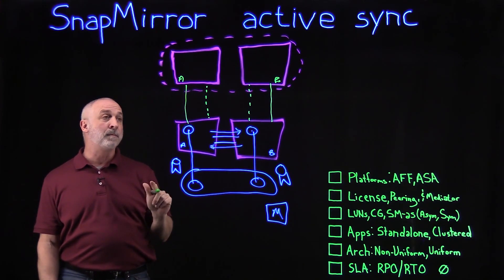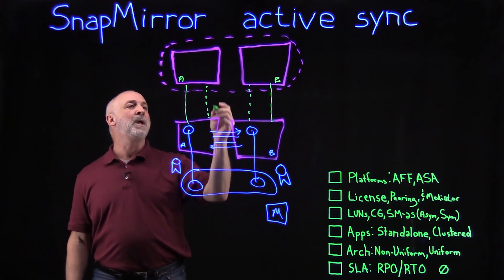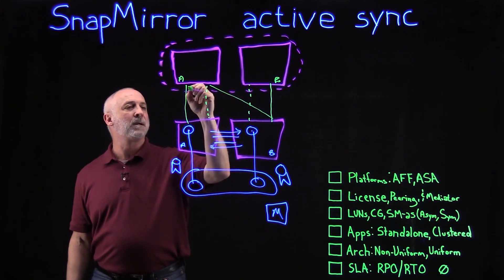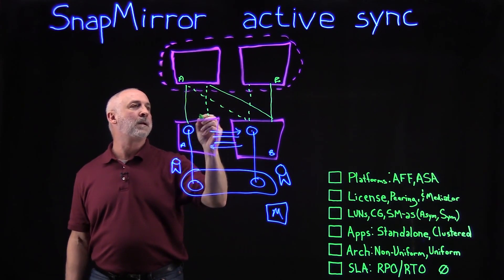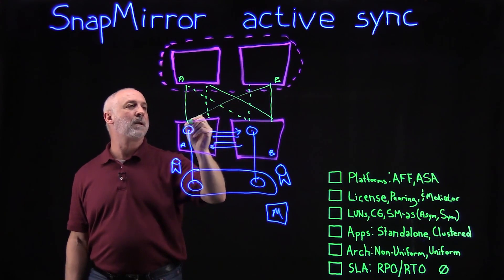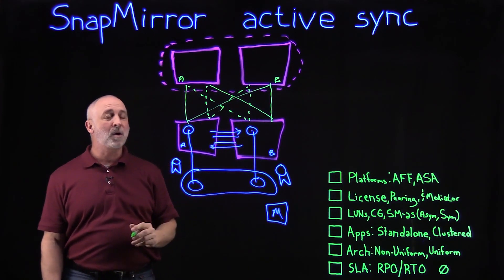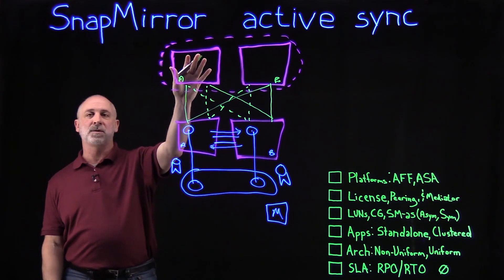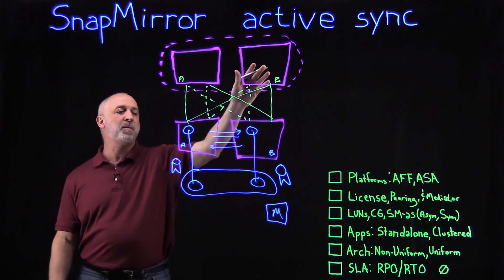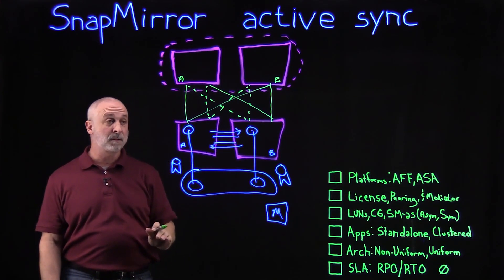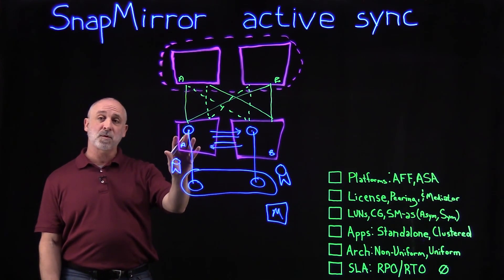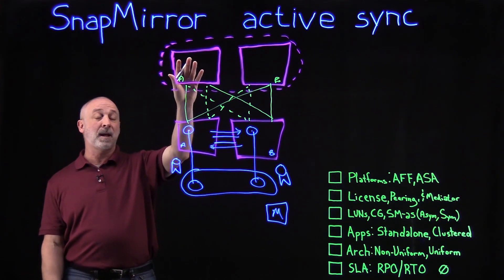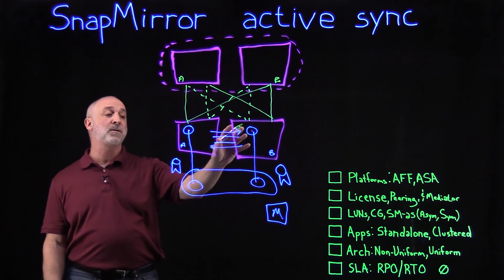But we can also deploy in a uniform architecture. This allows us to have connectivity across the wire and ensure that any outage is protected. If we lose our host at site A, our host at site B still has connectivity to both sides, and vice versa. If we lose our storage at site A, then site A's hosts are still able to communicate with their data through site B.